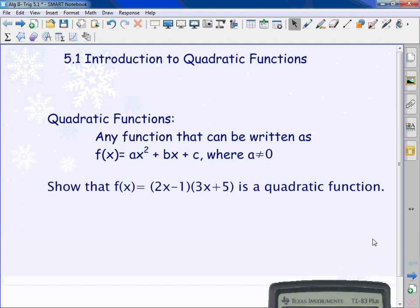We're going to show that f(x) = (2x - 1)(3x + 5) is a quadratic function. f(x) is just a fancy word that says we have a function, which means y. What do I need to do here? How can I show that it's a quadratic? I need to distribute. When I distribute, I use FOIL. What's 2x times 3x? 6x².